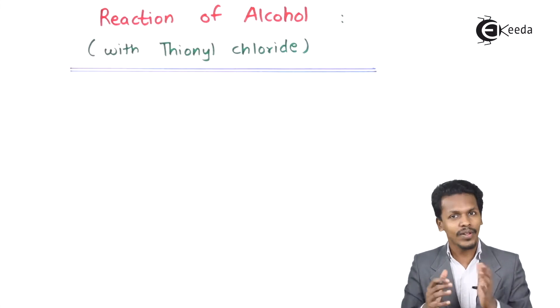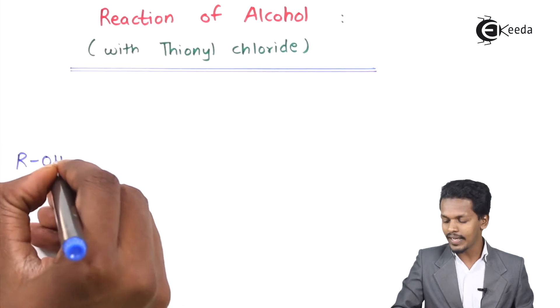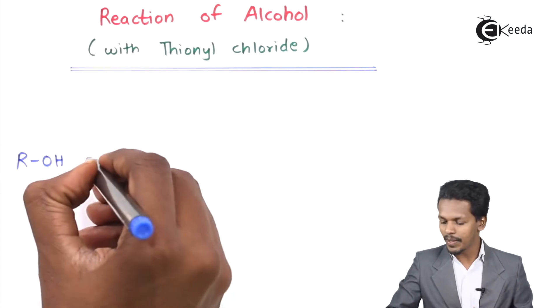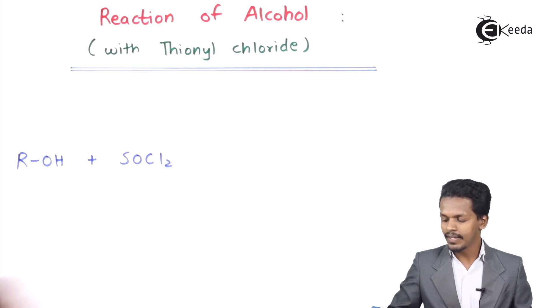In this topic, we are going to discuss the reaction of alcohol with thionyl chloride. For that, we have a general reaction that could be represented as: suppose we have an alcohol, that is ROH, and we are reacting with thionyl chloride, that is SOCl2.